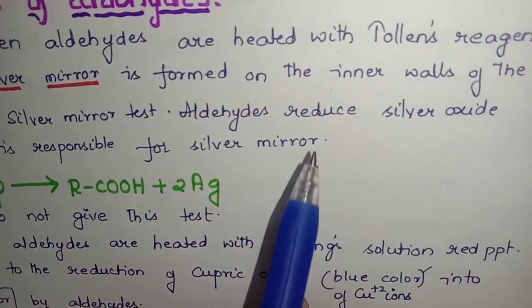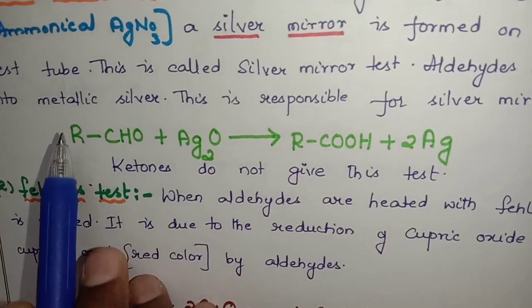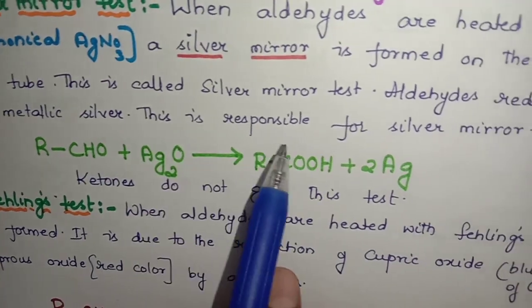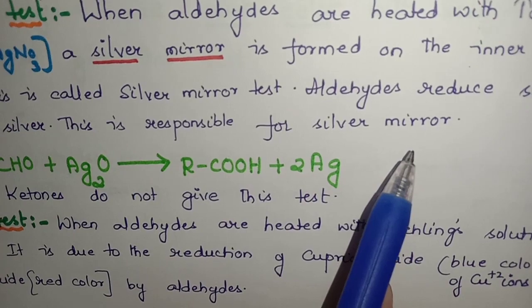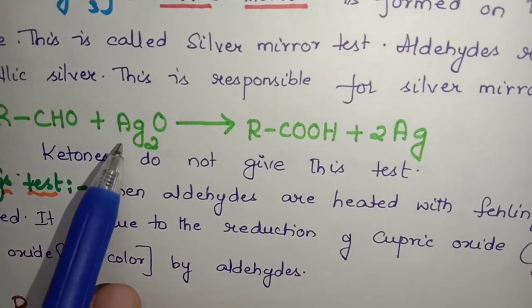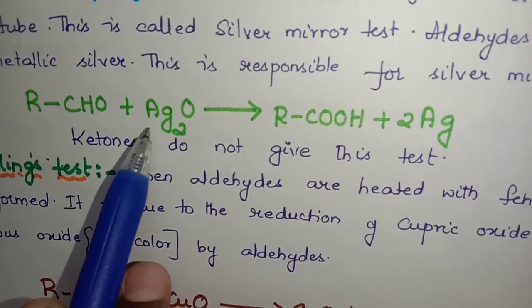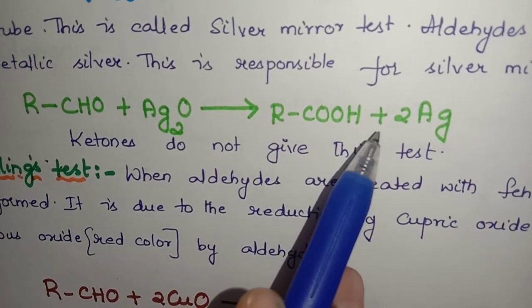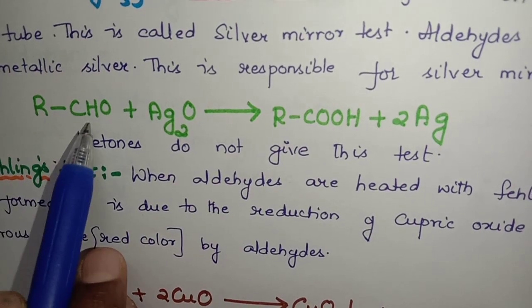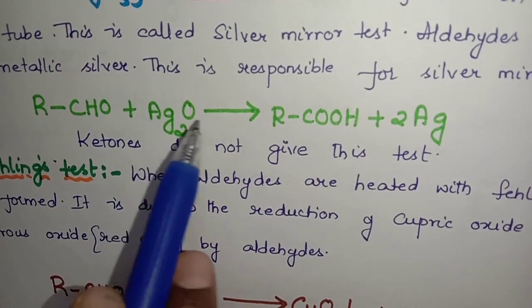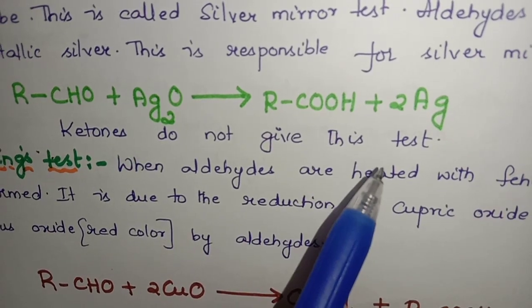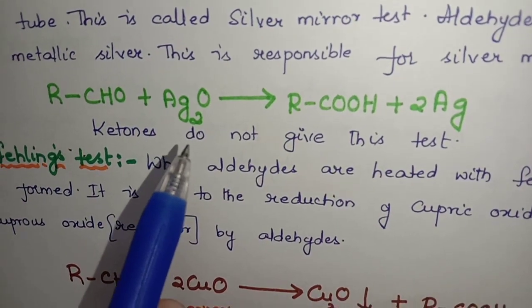Aldehydes reduce silver oxide into metallic silver. This metallic silver deposits on the walls of the test tube, which is responsible for the silver mirror. Now the reaction we write like this: RCHO, the general formula of aldehydes, plus silver oxide gives RCOOH plus 2Ag. Silver oxide is being reduced to silver. RCOOH is oxidized and Ag2O is reduced to Ag. Ketones do not respond to this test, so this is the way we differentiate aldehydes and ketones.